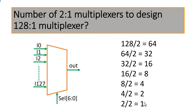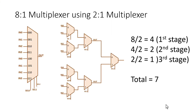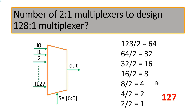The count is 127. Notice something amazing: in the previous example, implementing an 8-to-1 multiplexer required 7 2-to-1 multiplexers — that is 8 minus 1. In this example, implementing a 128-to-1 multiplexer requires 127 2-to-1 multiplexers — one less than 128.